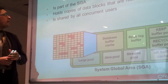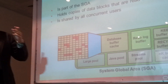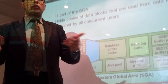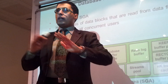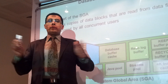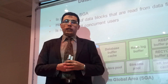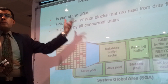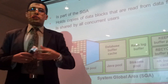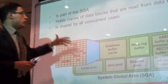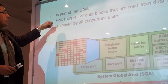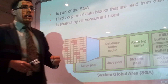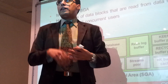Database buffer cache — it is a part of the system global area. We have discussed that before. So, what exactly does the database buffer cache hold? The database buffer cache holds copies of data blocks that are read from data files.